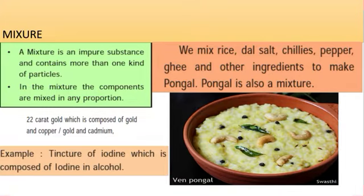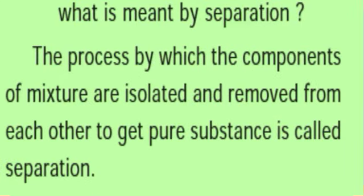A mixture can also be a physical combination of an element and a compound. Example: Tincture of iodine, which is composed of iodine in alcohol. The process by which the components of a mixture are isolated and removed from each other to get a pure substance is called separation.